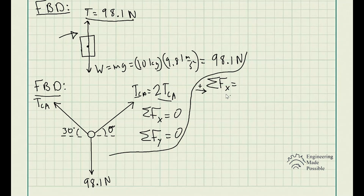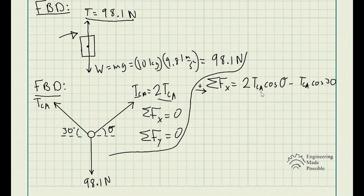For the summation of forces along the X direction, with the sign convention that rightward is positive, we have 2 times TCA times cosine theta, because I substituted TCB with 2TCA to avoid extra unknowns. Using 2TCA instead of TCB means we can factor TCA out later. This gives us the equation: 2TCA cosine θ − TCA cosine 30° = 0 for static equilibrium along X.